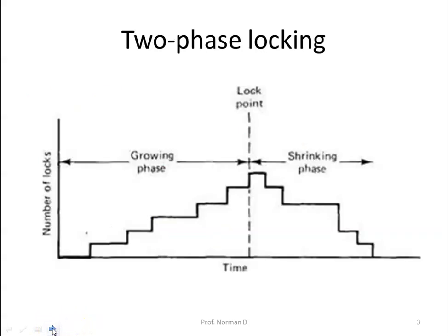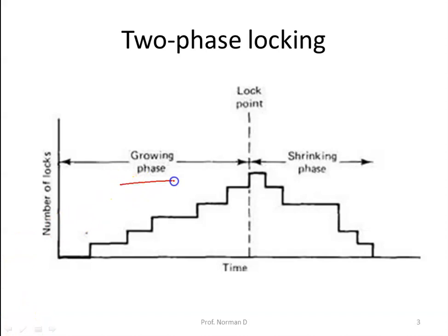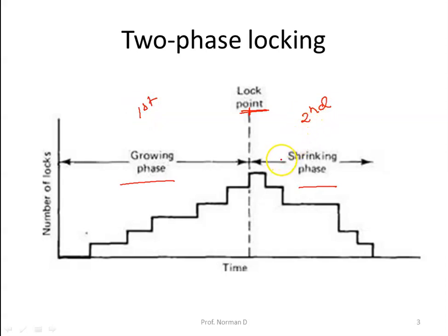The two-phase locking mechanism is illustrated in this figure. It shows two phases: the growing phase and the shrinking phase. In the growing phase, the process first acquires all the locks it needs during the execution of the transaction. After acquiring all the locks, it reaches a point called the lock point.